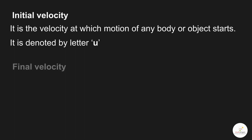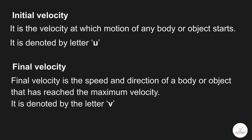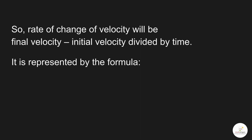And what is final velocity? Final velocity is the speed and direction of a body or object that has reached the maximum velocity. It is denoted by the letter V. Time is denoted by the letter T. So, the rate of change of velocity will be final velocity minus initial velocity divided by time, which is represented by the formula: A is equal to V minus U upon T.